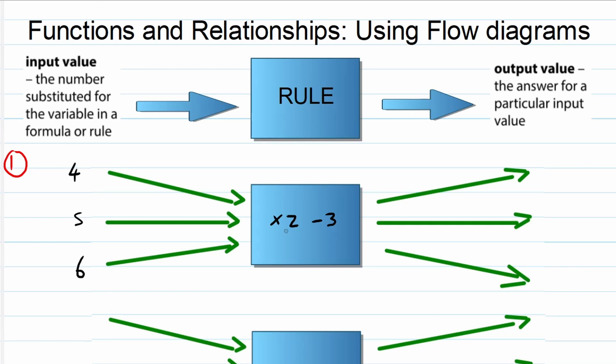So let's see, what is four times two? Well the answer is eight. You've probably guessed it and eight minus three is equal to five. So this five is the corresponding output value for an input value of four. Five times two is ten. Ten minus three is equal to seven. The next one, six times two is twelve. Twelve minus three is equal to nine. So this was our first example.